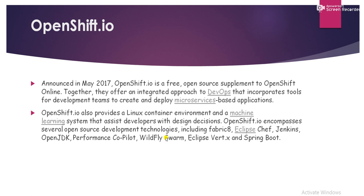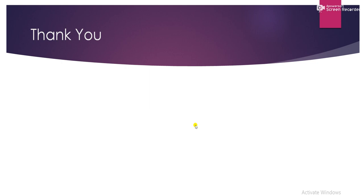Now we'll discuss the fourth model, which is OpenShift.io. It was announced in May 2017 and is a free open source supplement to OpenShift Online. Together they offer an integrated approach to DevOps that incorporates tools for development teams to create and deploy microservices-based applications. OpenShift.io also provides a Linux container environment and a machine learning system that assists developers in design decisions. It encompasses several open source development technologies including Fabric8, Eclipse Che, Jenkins, OpenJDK, Performance CoPilot, WildFly Swarm, Eclipse Vert.x, and Spring Boot.